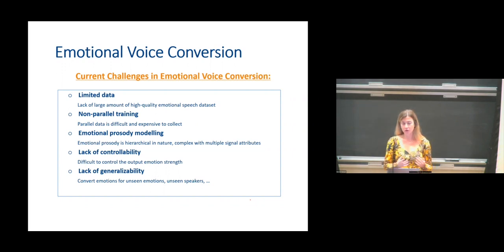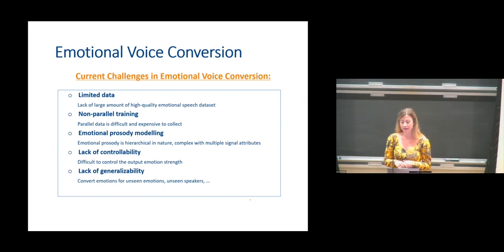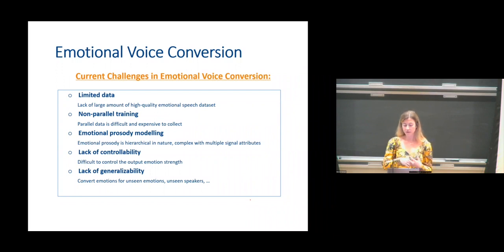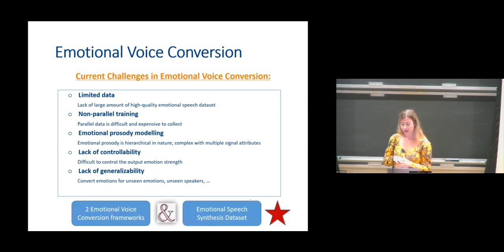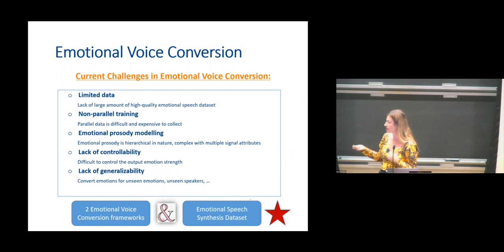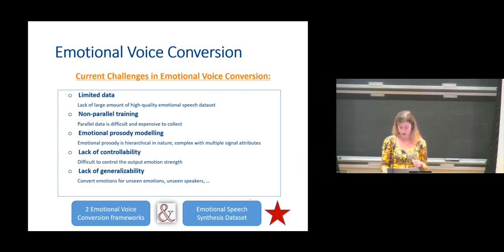We hope to build models that can work for anyone — not models for particular speakers, because that is not flexible. We want models that can handle unseen emotions. Imagine you train the model with happy and angry voices of people, and we want to ensure the model can also generate sad voices. We are trying to build more general models that handle unseen emotions and unseen speakers. In the last part of my talk, I would like to go through an emotional speech dataset we released — which is publicly available — and two emotional voice conversion frameworks whose codes are also publicly available. I will share the QR codes and GitHub pages.